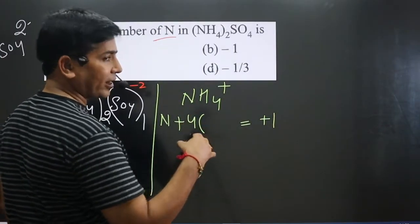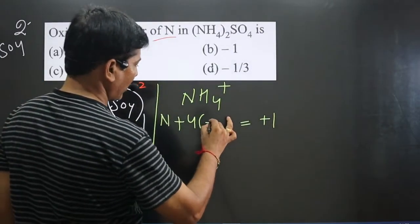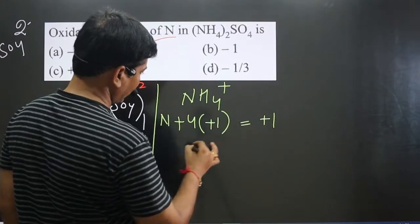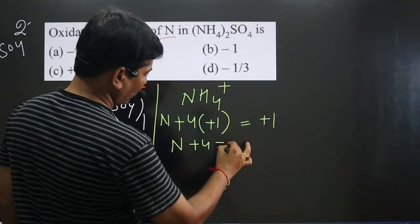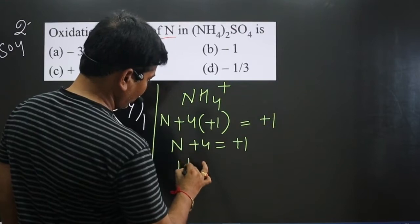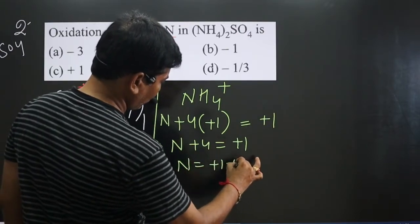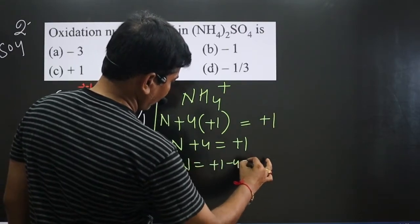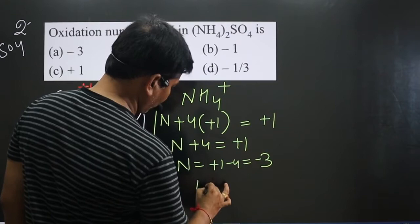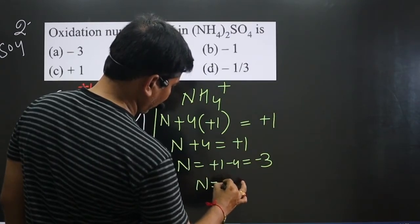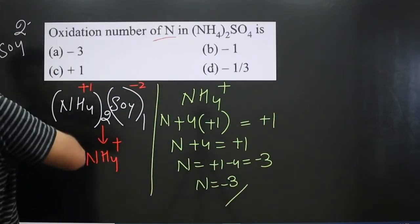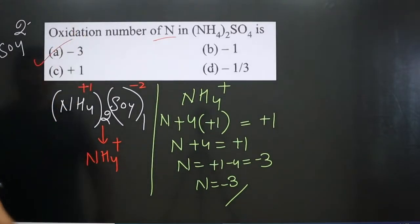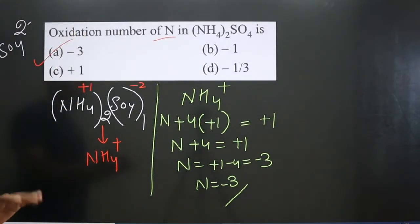Hydrogen attached to a non-metal shows a plus one oxidation number. So: nitrogen + 4(+1) = +1, which gives nitrogen = +1 − 4 = −3. So nitrogen is present in the −3 oxidation state. This is Method 1 and it gives the correct answer.